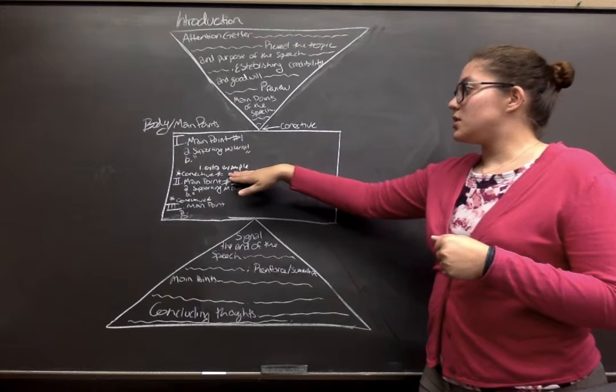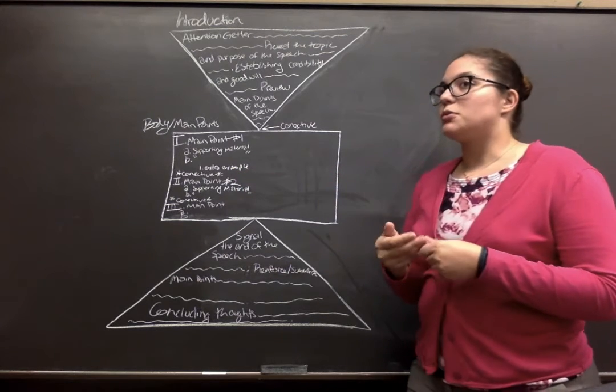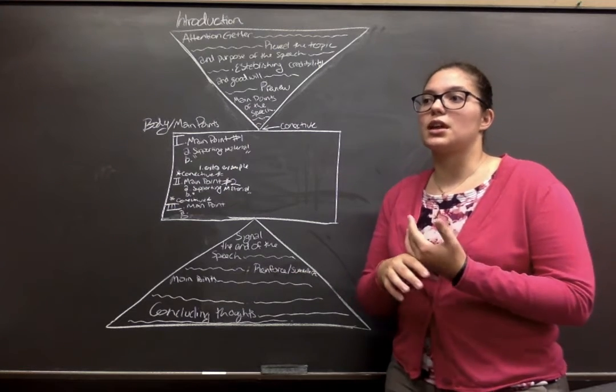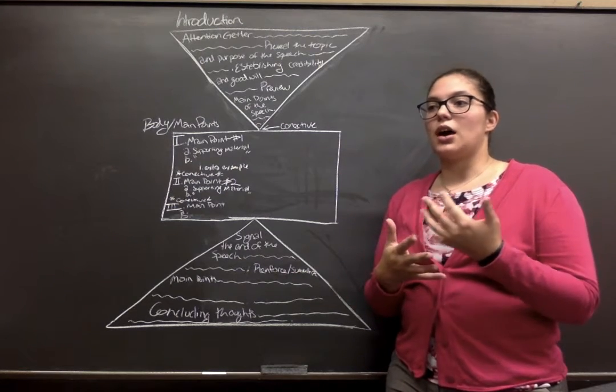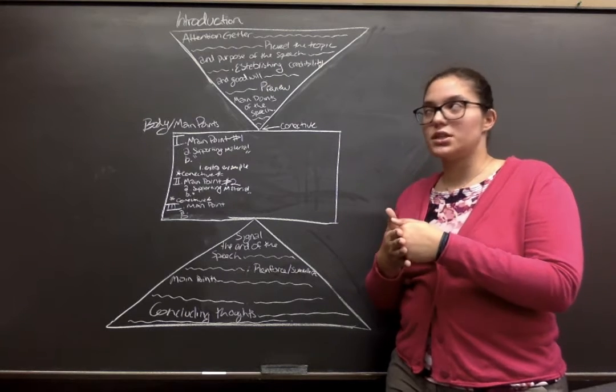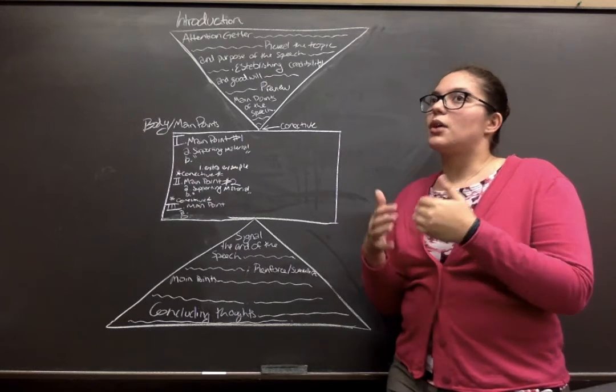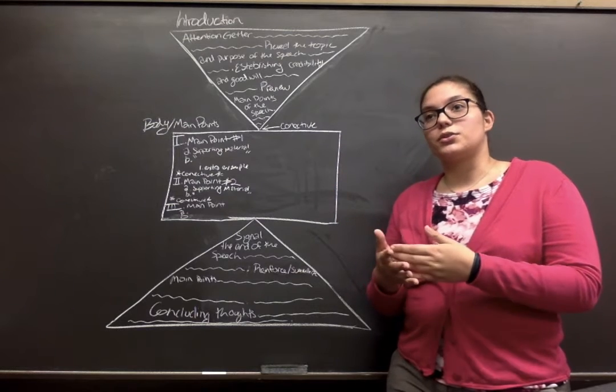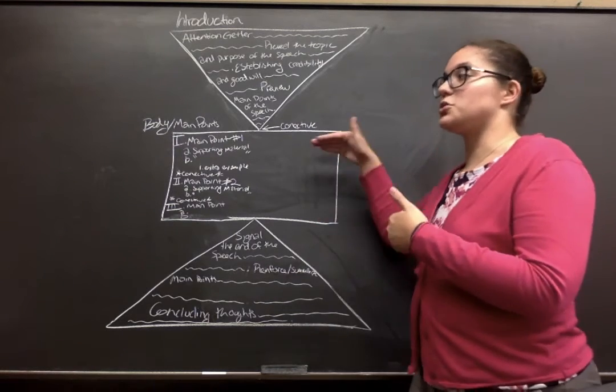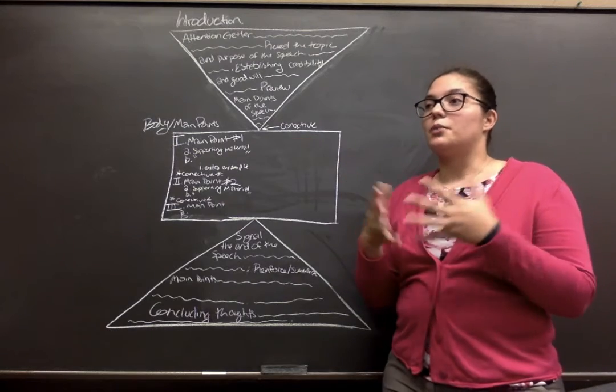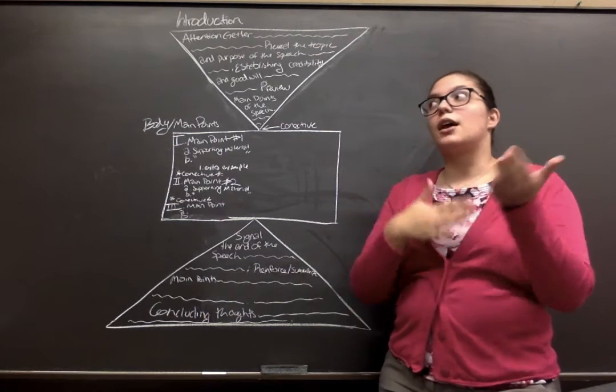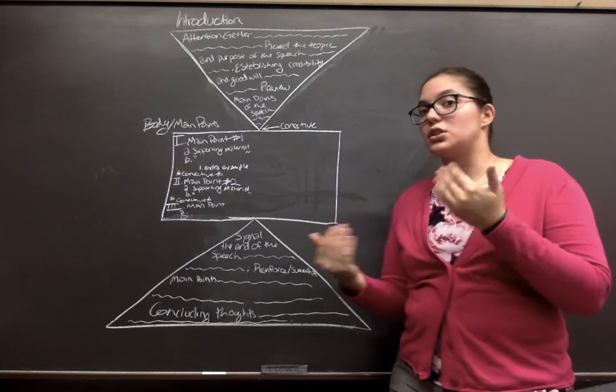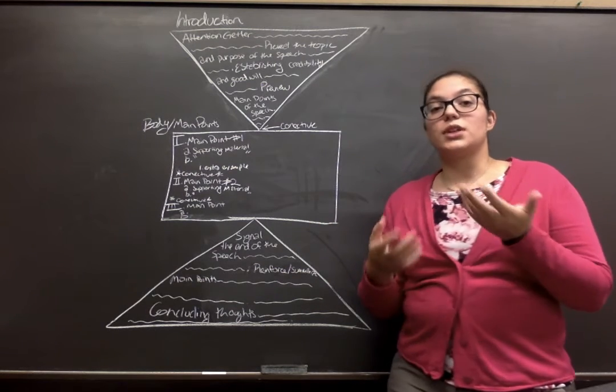So then there's typically a connective here. As I mentioned before, there are different types of connectives. So connectives are just something within your speech that help transition to the next point that you're going to talk about. So I mentioned earlier that there's an internal preview. There are also internal summaries. So you can summarize what you just talked about saying, I just informed you on this. Now let's talk about this. You could also use a transition or you can use signposts.